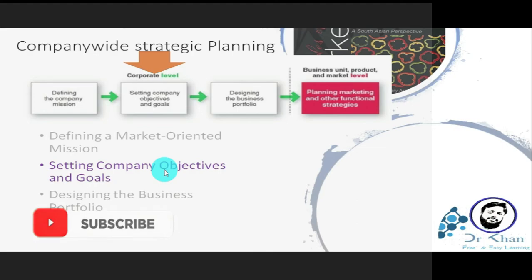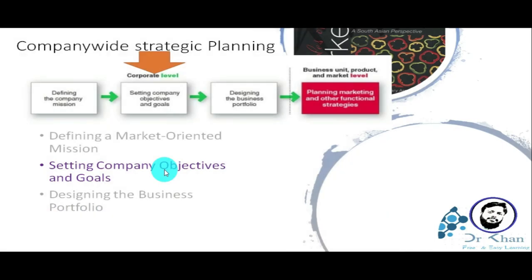Objectives and goals cannot be contradicted — they must be in the direction of the mission statement. Companies set objectives and goals at the corporate level, the business level, and the operational level.